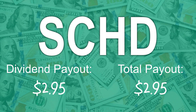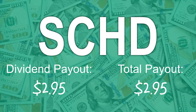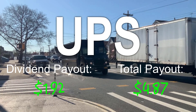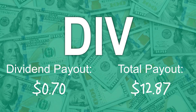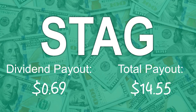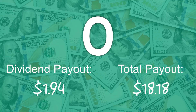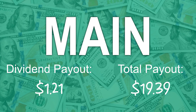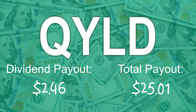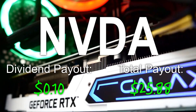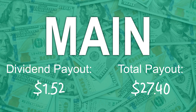I invested about $75 into SCHD for the month of March after selling some older positions, which led me to make $2.95 in dividends. Besides SCHD, here are the 16 other positions that paid me dividends in March: $1.92 from UPS, $2.33 from ExxonMobil, $4.97 from Target, $0.70 from GlobalX Superdividend US ETF, $0.99 from Microsoft, $0.69 from Static Industrial, $1.69 from McDonald's, $1.94 from Realty Income, $1.21 from Main Street Capital, $2.29 from Home Depot, $0.87 from S&P 500 High Dividend Low Volatility ETF, $2.46 from GlobalX NASDAQ 100 Cover Call ETF, $0.77 from iShares Semiconductor ETF, $0.10 from NVIDIA, $1.52 from Main Street Capital again, and $1.27 from Digital Realty Trust.